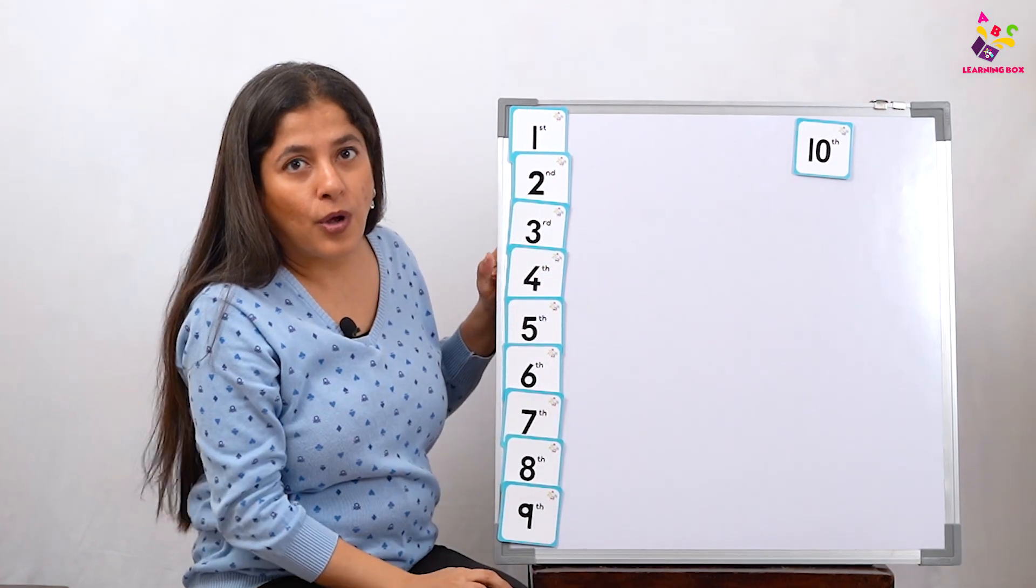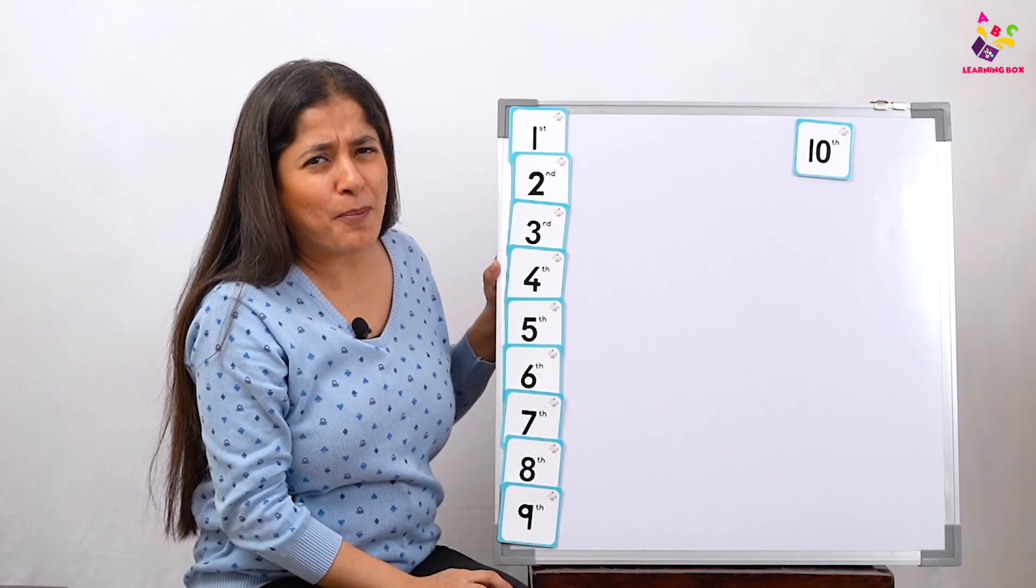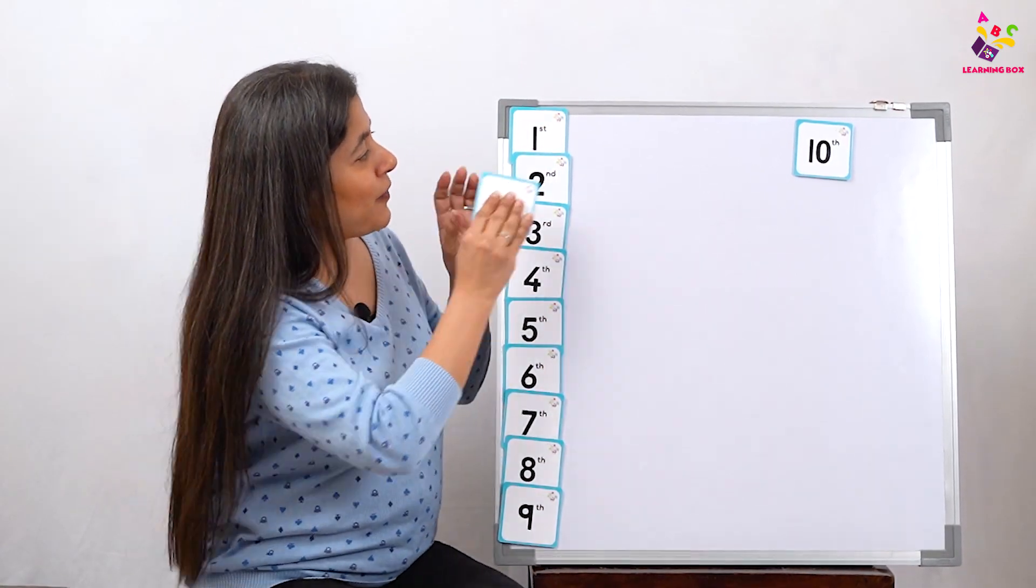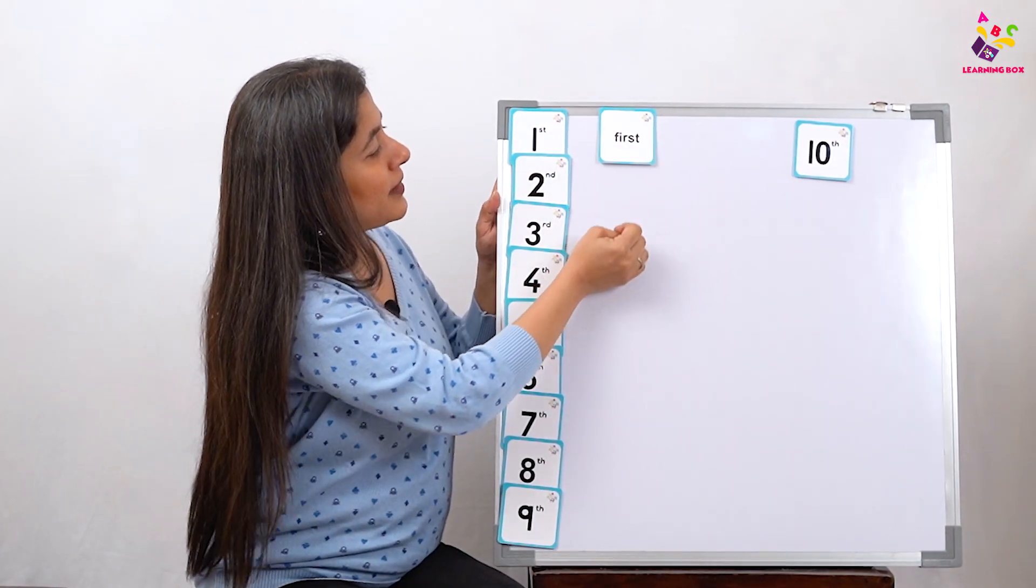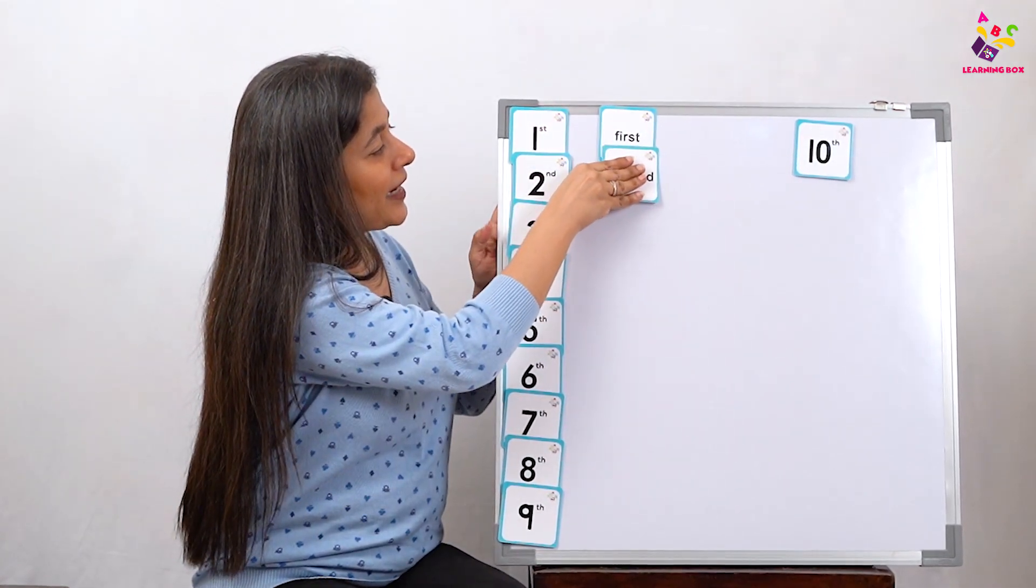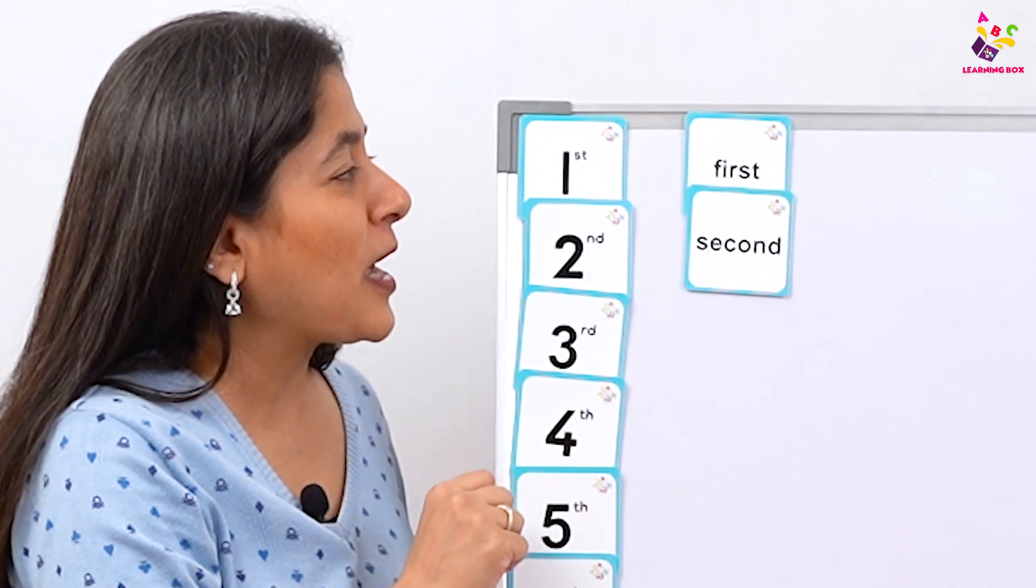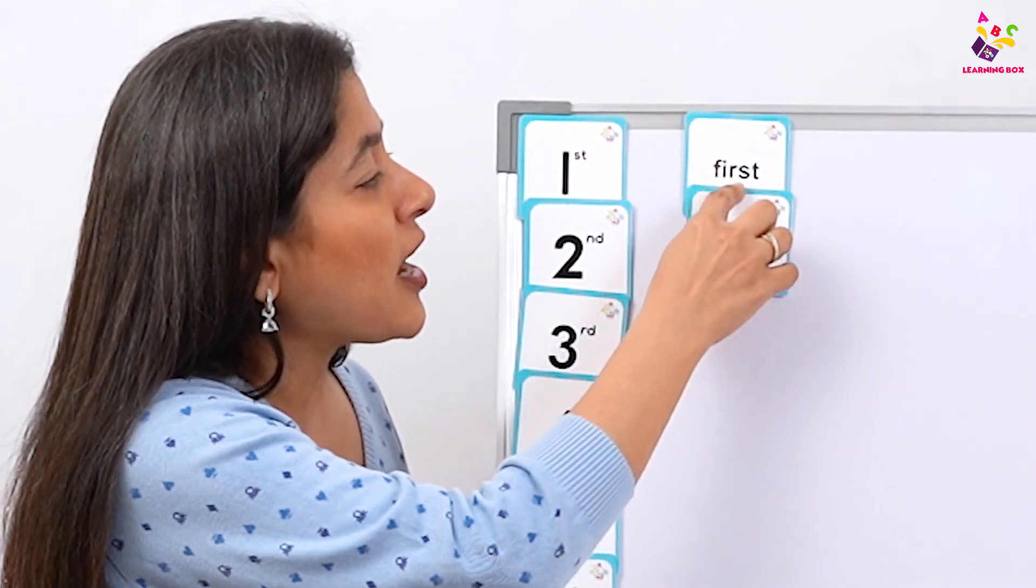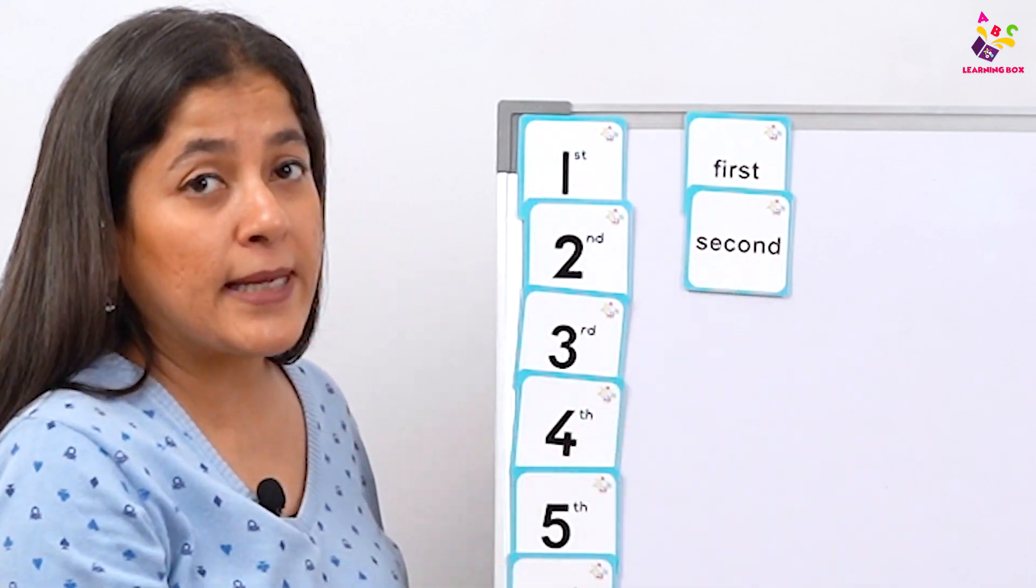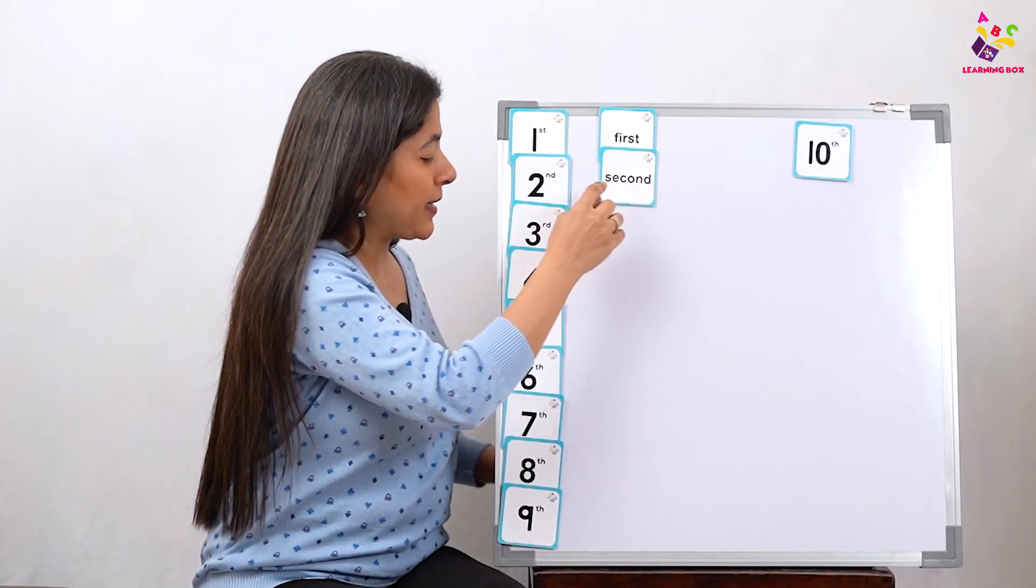Now you'll all have to read the number ones with me. Come on, let's start. First, second. We are not going to spell them out. We are not going to say F-I-R-S-T or S-E-C-O-N-D. We are just going to say first, second.